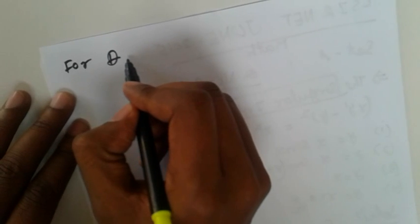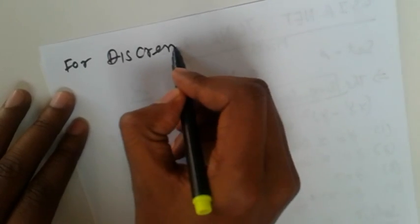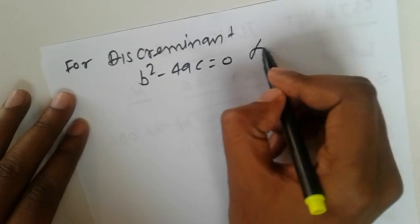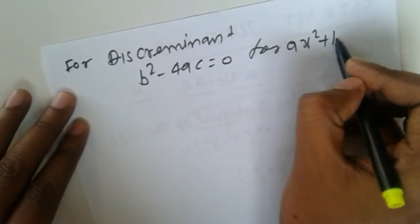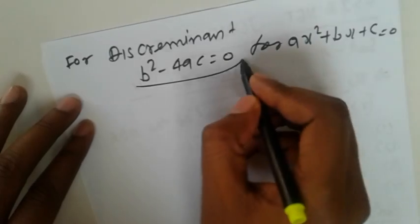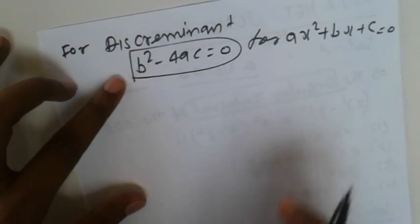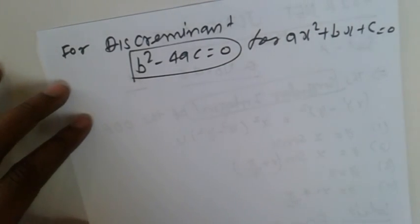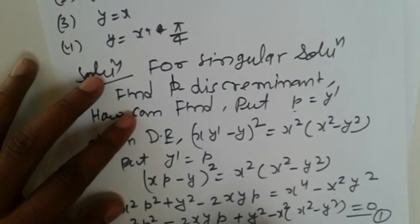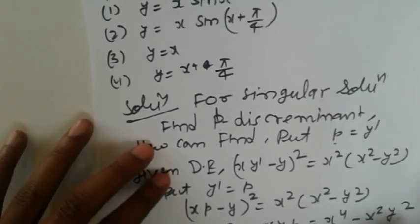For the P discriminant, we use the discriminant condition B squared minus 4AC equal to 0, for Ax squared plus Bx plus C equal to 0, that gives similar solutions. The coefficient B is minus 2xy.